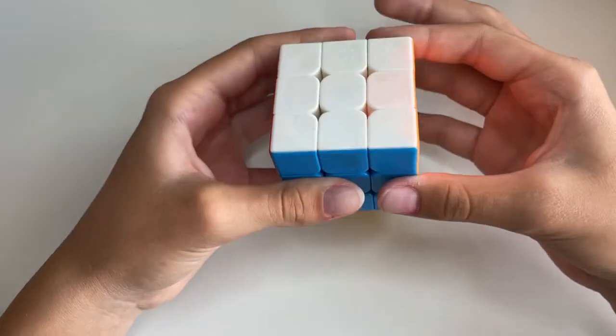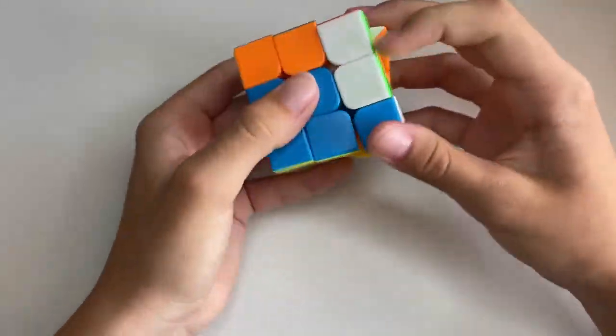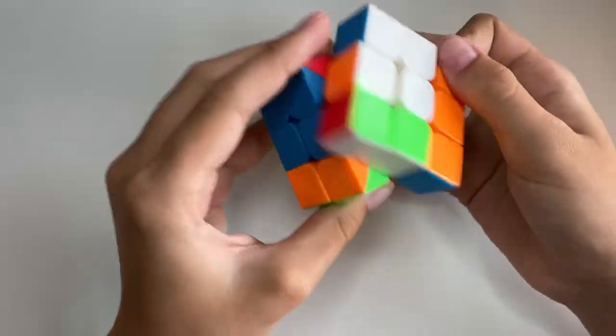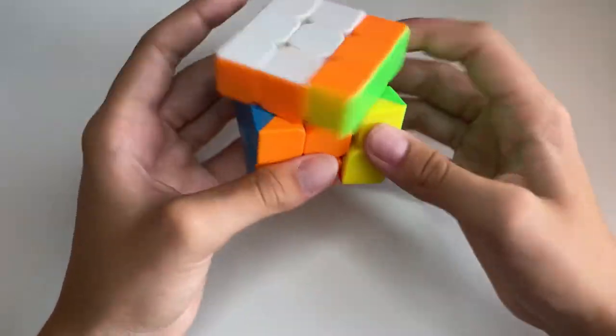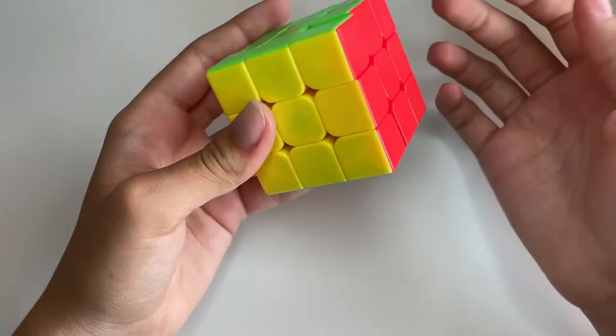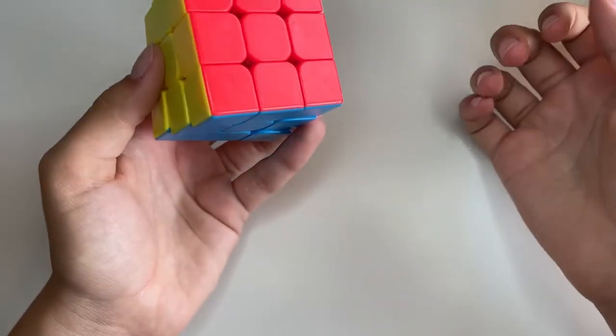This came in a set of a 2x2 through 5x5 cubes. I'm not sure of the name. I believe it was MFJS, though, as the brand, and it's not super great, but if you're a slow turner, then you'd probably be fine off with this cube.